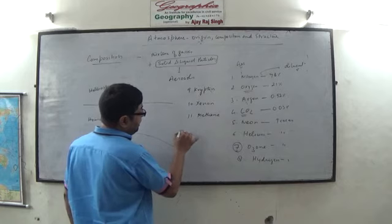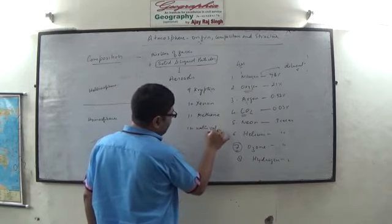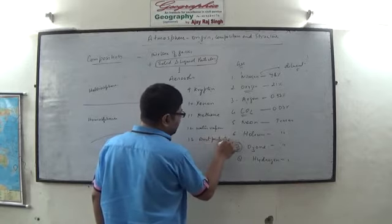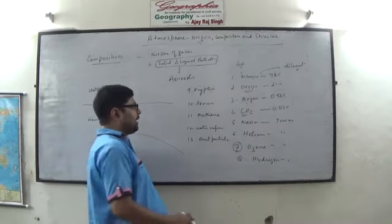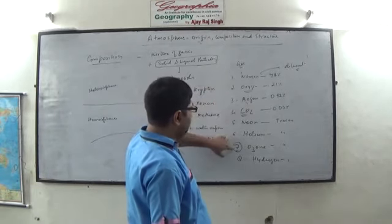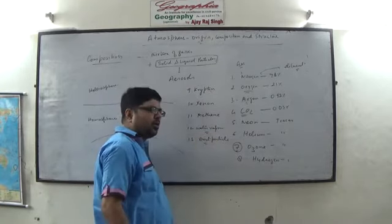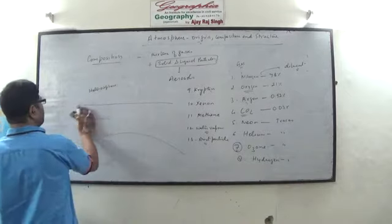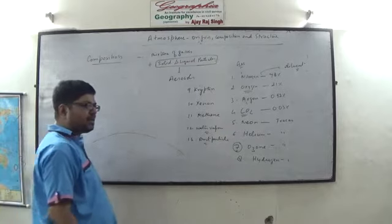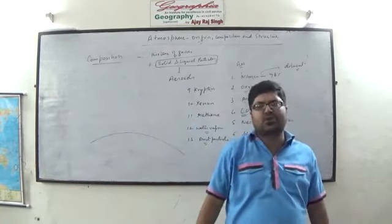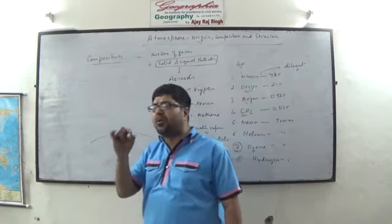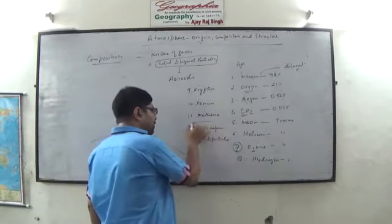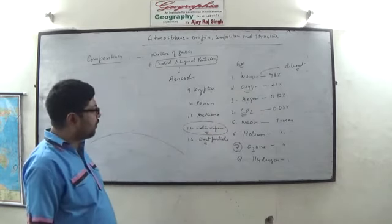Apart from these gases, water vapor and dust particles are also very important. Water vapor is mostly present in the lower part of the atmosphere — 90% of water vapor is found up to 6 kilometers, and 99% up to 10 kilometers. Water vapor is the source of all cloud and rainfall and is the most important greenhouse gas — the most efficient absorber of heat. Water vapor plays a very important role in maintaining global temperature as well as the formation of clouds and rainfall.